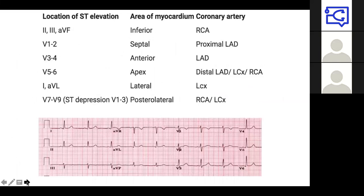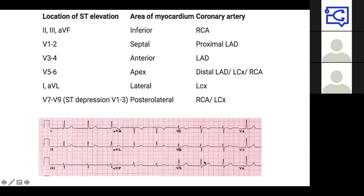With regards to location of lesions: leads II, III, and AVF are inferior — that could be the RCA. V1 and V2 are septal and could be the proximal LAD. V3 to V4 is anterior and also consistent with the LAD. V5 to V6 is the lateral side of the heart. There's also a more obscure version: ST depression in V1 to V3 is more likely to be a posterior MI, because a STEMI in the posterior leads shows up as ST depression in V1 to V3 rather than elevation. These categories are in the notes if you want to review them later.